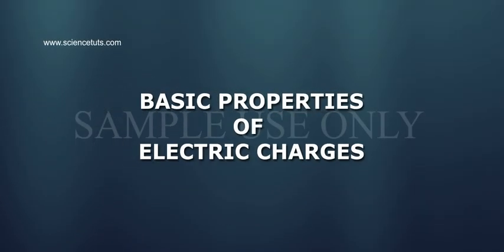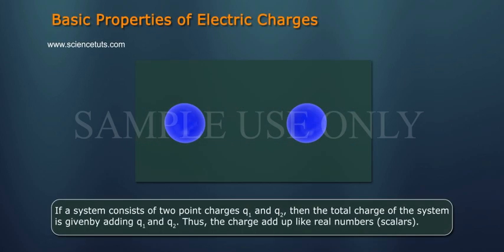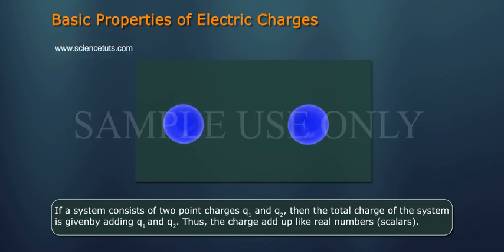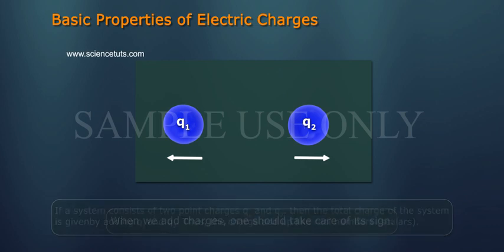Basic properties of electric charges: If a system consists of two point charges q1 and q2, then the total charge of the system is given by adding q1 and q2. Thus, charges add up like real numbers or scalars.